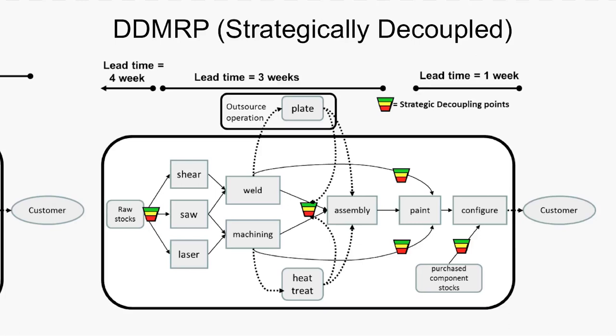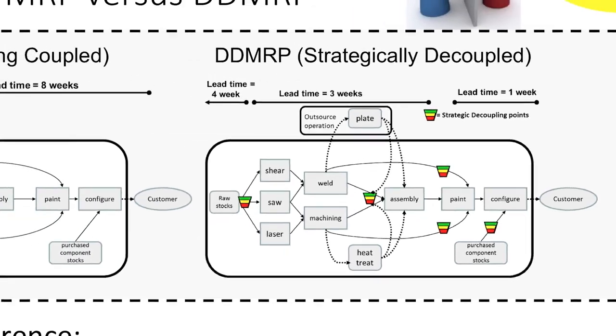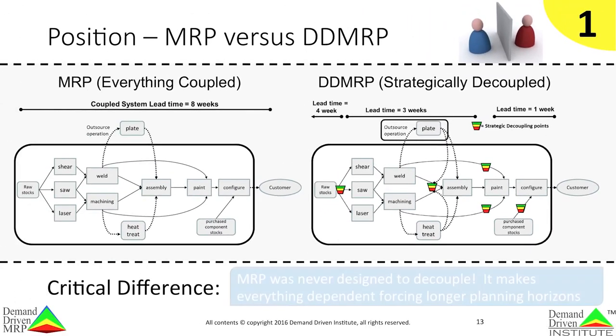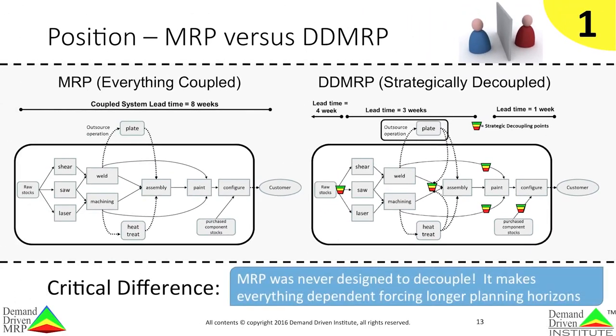The critical difference here is that MRP was never designed to decouple. It makes everything dependent, forcing longer planning horizons and introducing massive amounts of system nervousness.